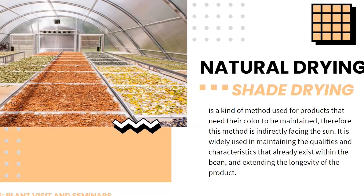Also under natural drying is shade drying, a method used for products that need their color to be maintained — it is therefore indirectly facing the sun. It is widely used in maintaining the qualities and characteristics of the product and extending its longevity. Shade drying is done to slow down the drying phase, as some products like coffee take longer to reach a stable water content level. Examples of products under shade drying include beans, coffees, herbs, and green and red chilies.